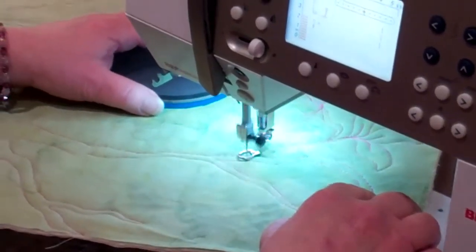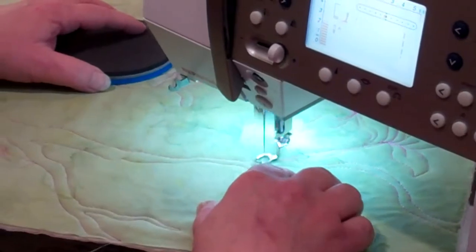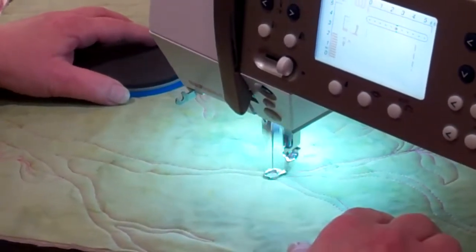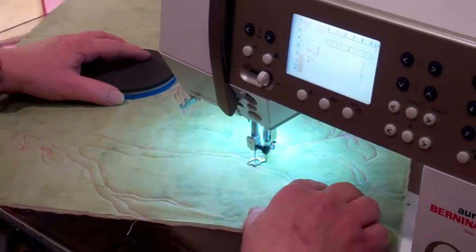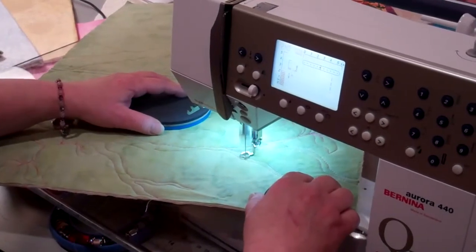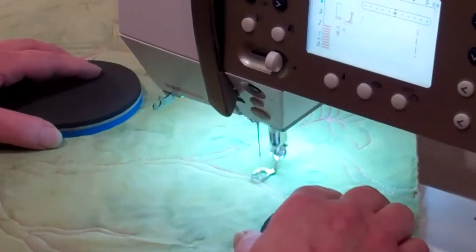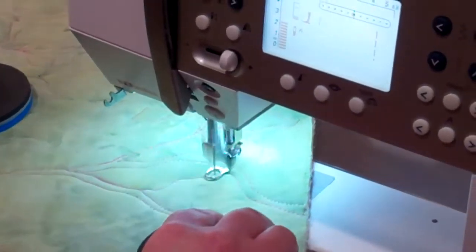I'm going to come down here so I can add this. I'm going to stitch across so this branch is in the front, and I want to add another leaf. A little branch and leaf coming out here.